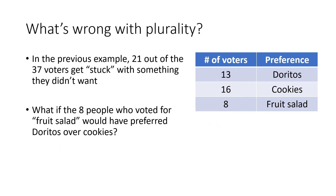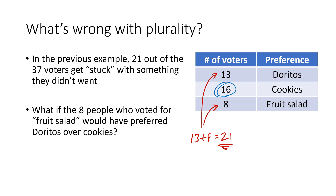So what's wrong with plurality? Even though 16 people — more than any other candidate — wanted cookies, there are 21 people (13 plus 8) who wanted something else and got stuck with something they didn't want. And 21 is a majority. So you have a majority of voters who want something other than the thing that won, and that's why this sort of feels unfair.